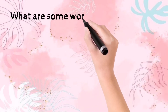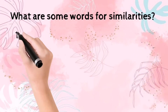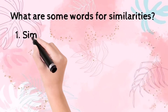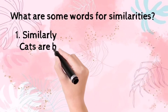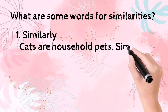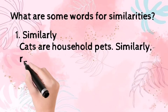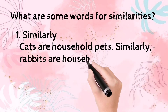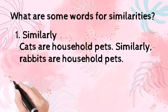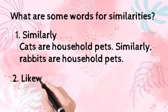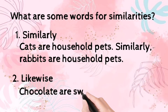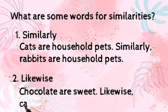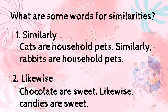What are some words for similarities? The first example is 'similarly.' Cats are household pets. Similarly, rabbits are household pets. The second example is 'likewise.' Chocolate is sweet. Likewise, candies are sweet.